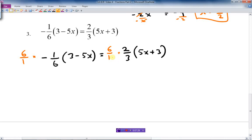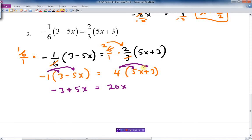So what happens here is I multiply 6 goes into 6 one time. 1 times negative 1 is negative 1. So I'm just going to write that down. We'll multiply the bracket out in a minute. And here, 3 goes into 6 twice. 2 times 2 is 4. And I've still got my bracket there. I haven't multiplied it out yet. But now I can multiply it out. Multiply this. Negative 1 times 3 is negative 3. Negative 1 times negative 5x is positive 5x. Negative times a negative is a positive. Multiply this one out. 4 times 5x is 20x. 4 times 3 is 12.